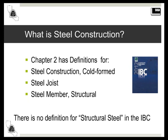For cold-formed, we usually are thinking of light-framed studs, tracks, and joists, but it also includes things like girts, purlins, metal building systems, floor, roof and wall panels, unistrut-type members, and even steel storage racks. I don't think it was meant to include HSS members for ASTM A500 that also happen to be cold-formed. The definition of steel member structural refers to rolled steel structural shapes other than cold-formed steel or steel joist members.